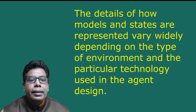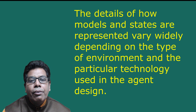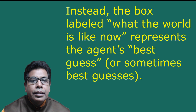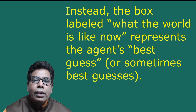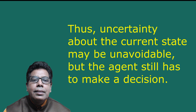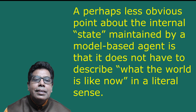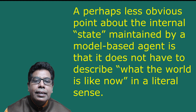The details of how models and states are represented vary widely depending on the type of environment and the particular technology used in the agent design. Regardless of the representation used, it is seldom possible for agents to determine the current state of a partially observable environment exactly. Instead, the box labeled 'what the world is like now' represents the agent's best guess, or sometimes best guesses. For example, an automated taxi may not be able to see around a large truck stopped in front of it and can only guess about what may be causing the holdup. Thus, uncertainty about the current state may be unavoidable, but the agent still has to make a decision. A less obvious point is that the internal state maintained by the model-based agent does not have to describe what the world is like now in a literal sense.